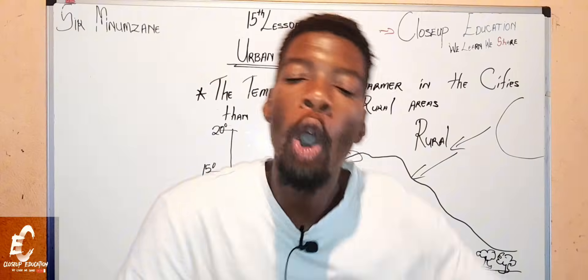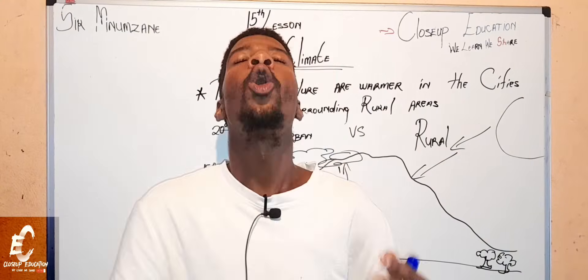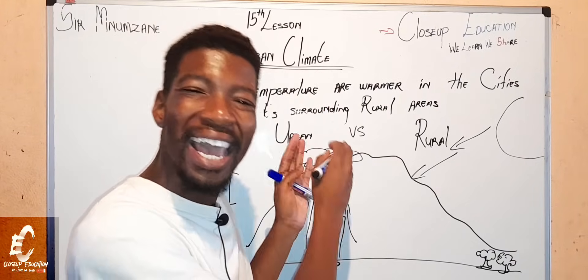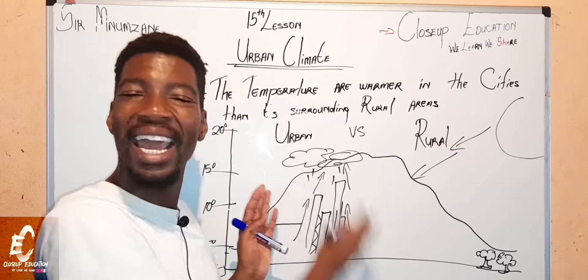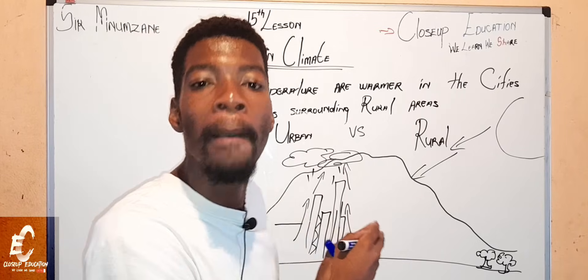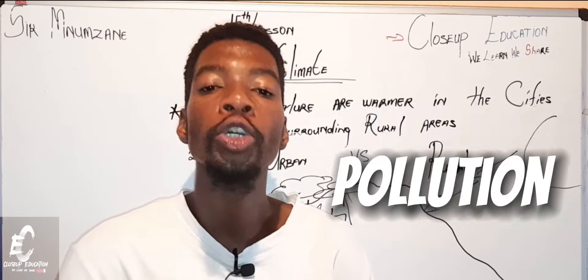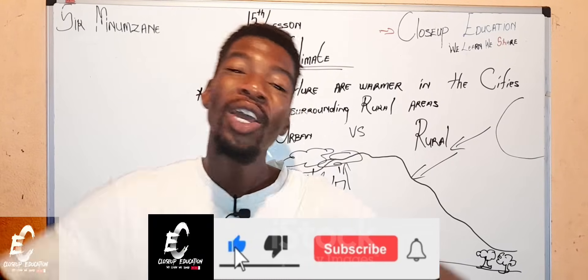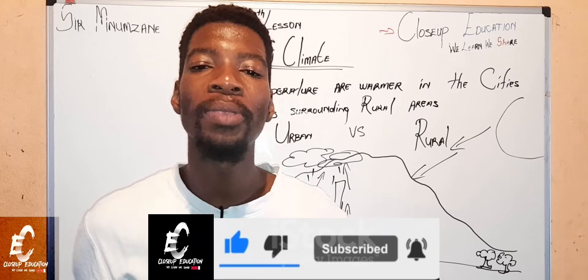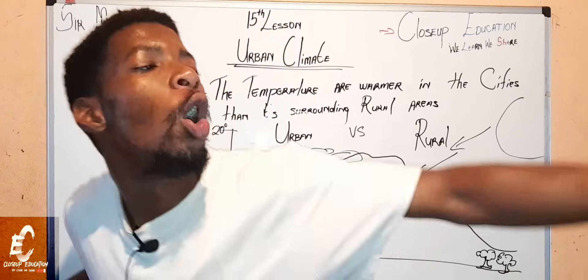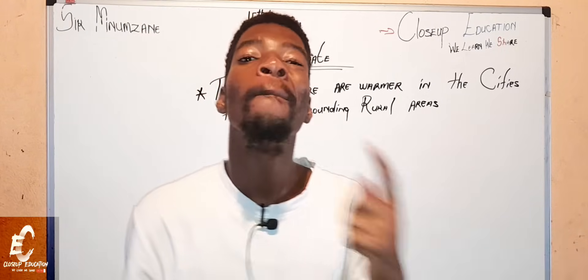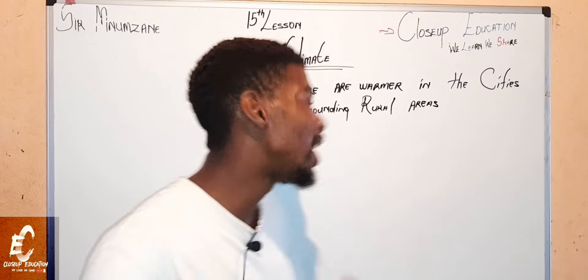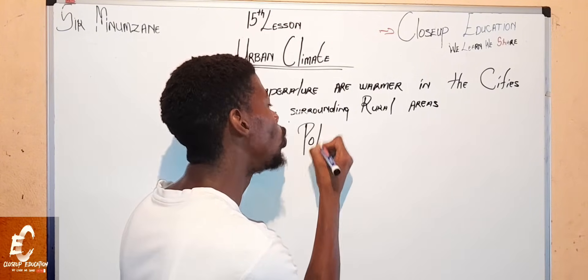We also have to understand the pollution dome, because there are a lot of human, industrial, and business activities happening in an urban area, meaning there will obviously be pollution. So there is what we call a pollution dome. Make sure you like this video — more lessons like this are coming.